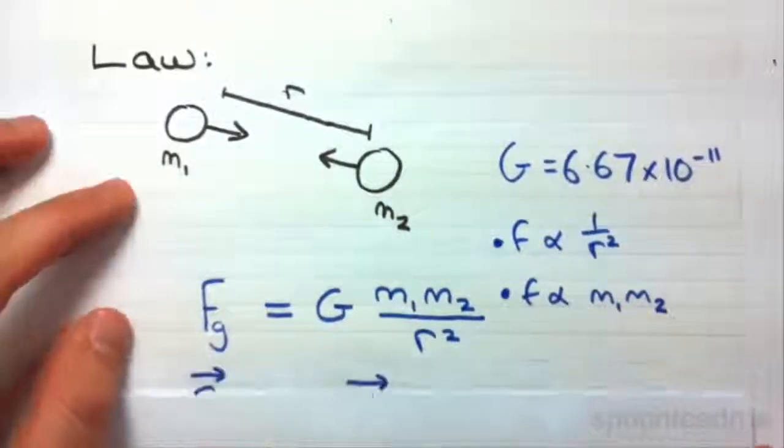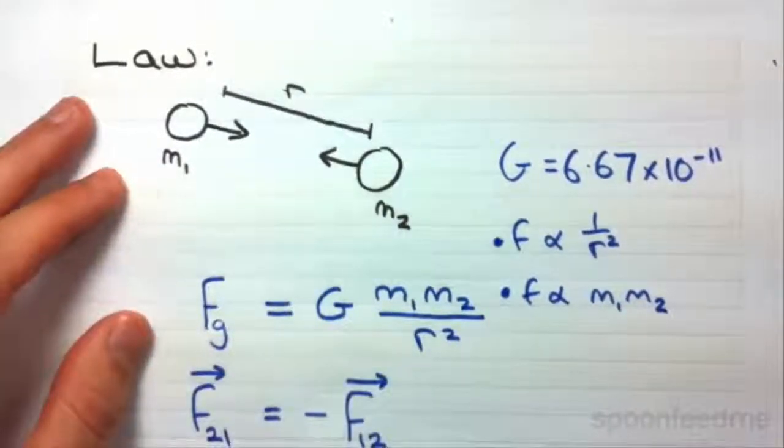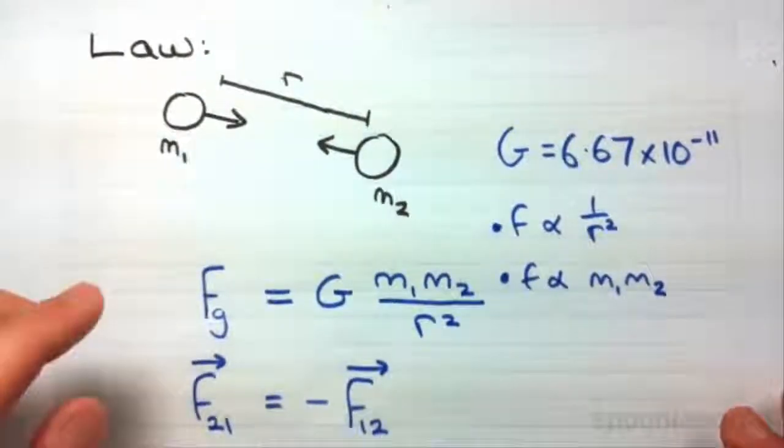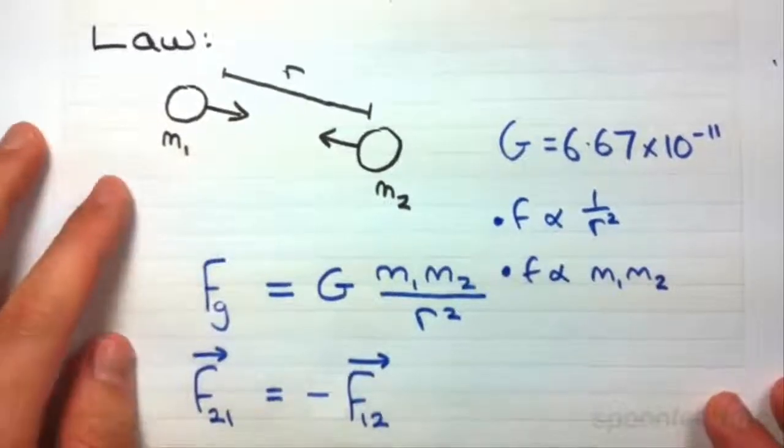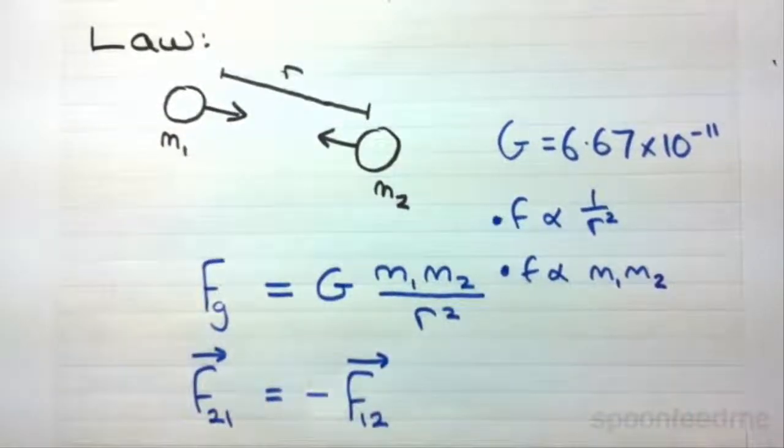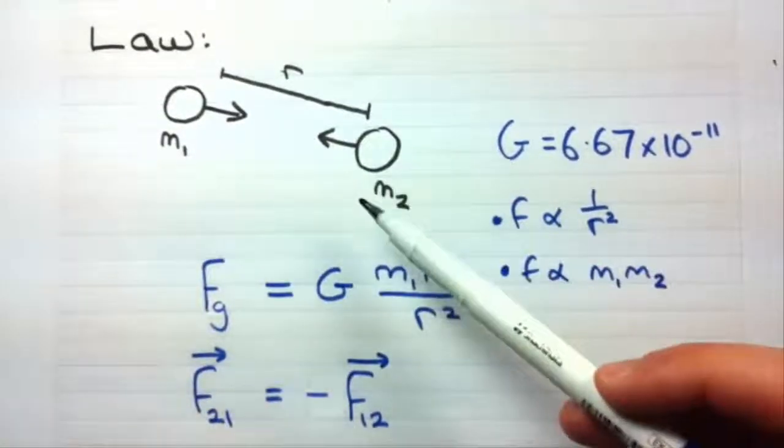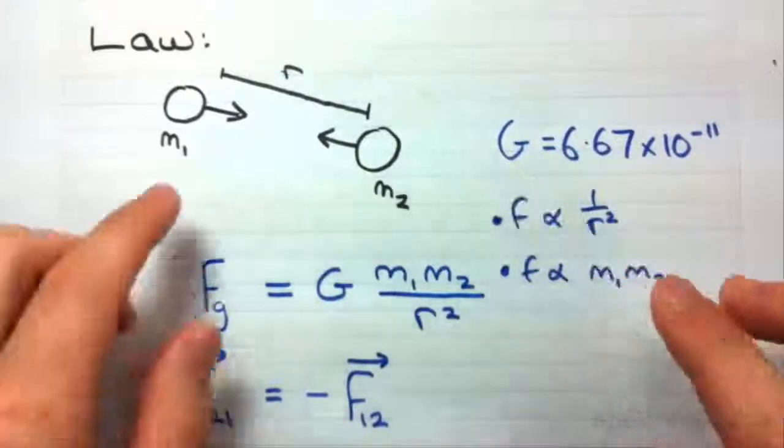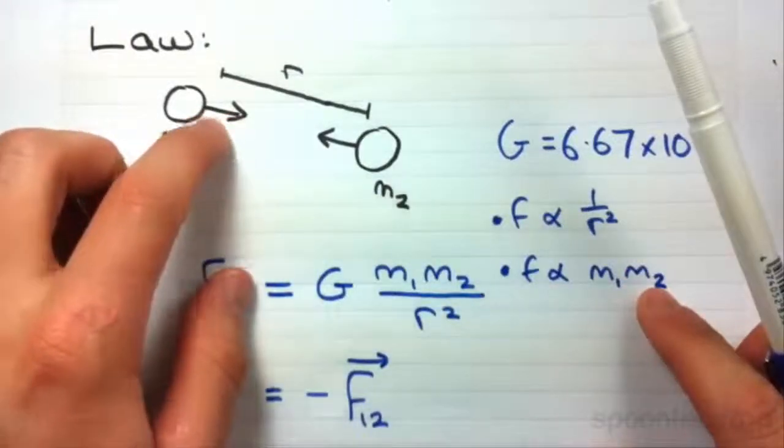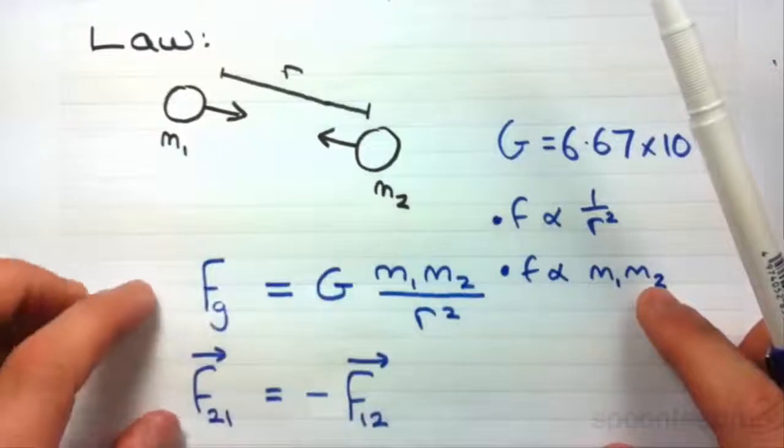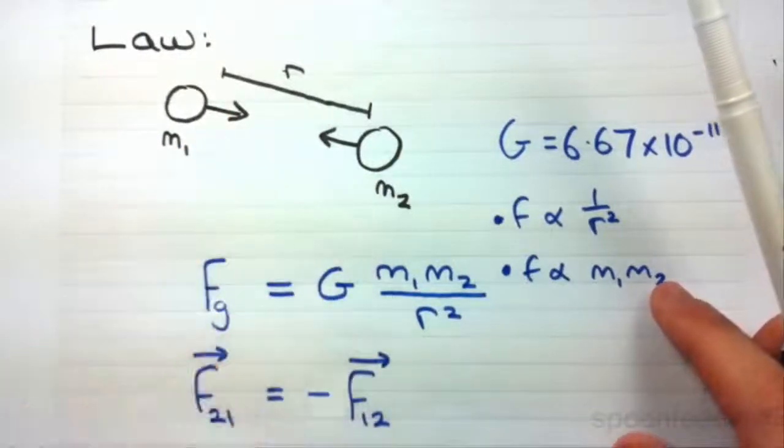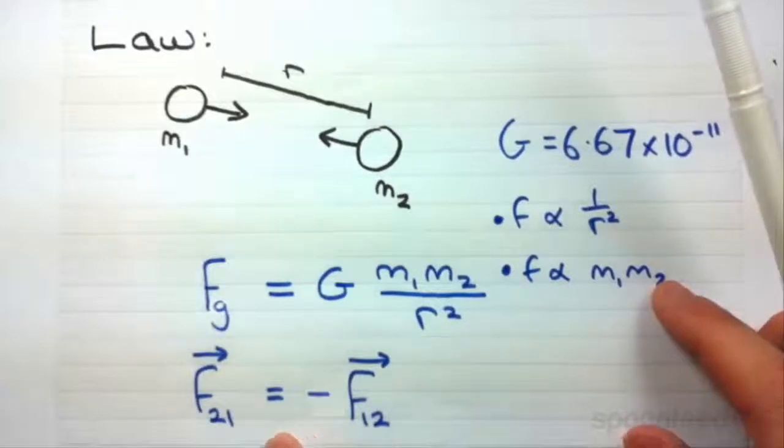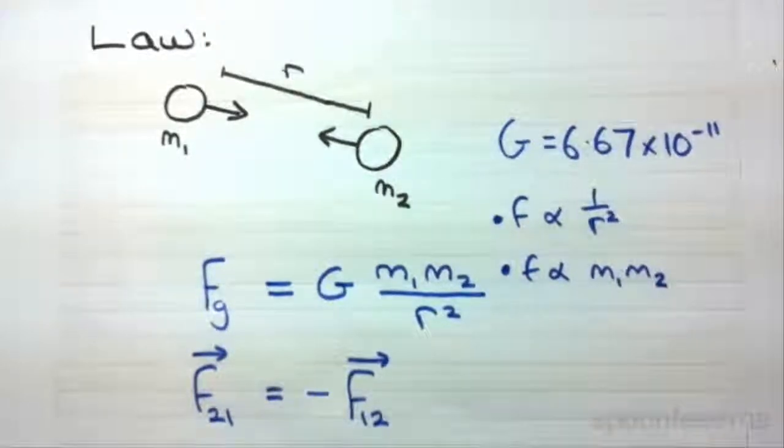So one other point that is raised is that these two forces between the two are a Newton action and reaction pair. And the force of 2 on 1, which is this force, the attraction force pulling 1 towards 2, is actually equal and opposite to the force of 1 on 2. And that's demonstrated in this force vector equation at the bottom there.